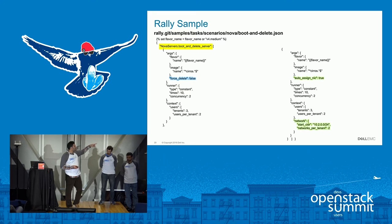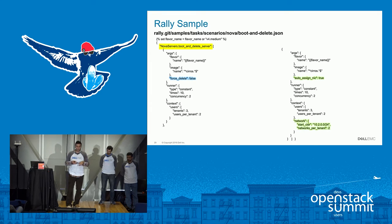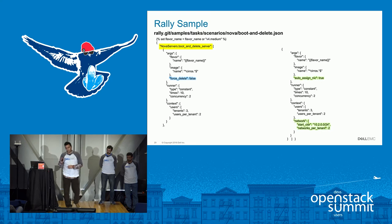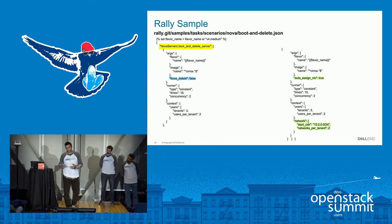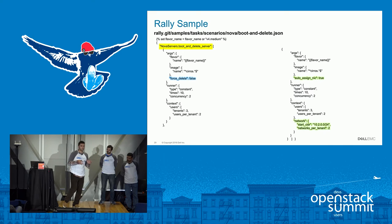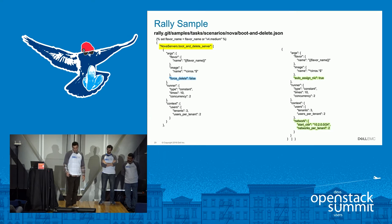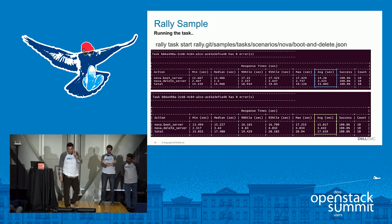Under the runner you'll see 'times: 10', so it will initialize 10 Nova instances, apply these parameters to them, and then delete them. On the left scenario I am not using force delete. On the right scenario, in addition, I do have force delete enabled and I am assigning a subnet and a network to the instances. You will see that the scenario on the right takes a little more time than the left because it needs time to create the network and uses force delete.